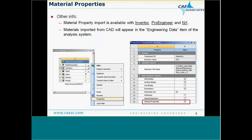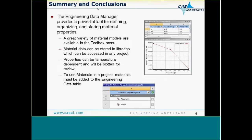If you have material properties entered in your CAD program — such as Inventor, ProE, or NX — you can import those from the project page when you import your geometry, and those material properties will get imported into the Engineering Data Manager. To conclude: the Engineering Data Manager provides a powerful tool for defining, organizing, and storing material properties. There is a great variety of material models available in the Toolbox on the left side. Material data can be stored in libraries for use in your own projects or shared with others.